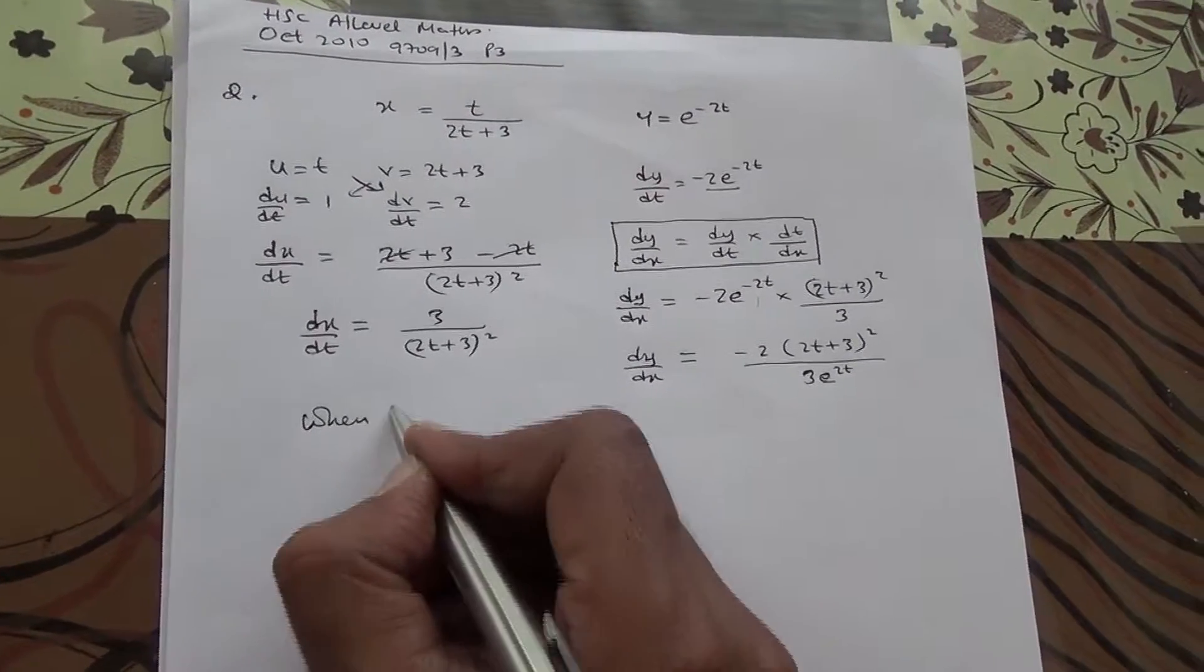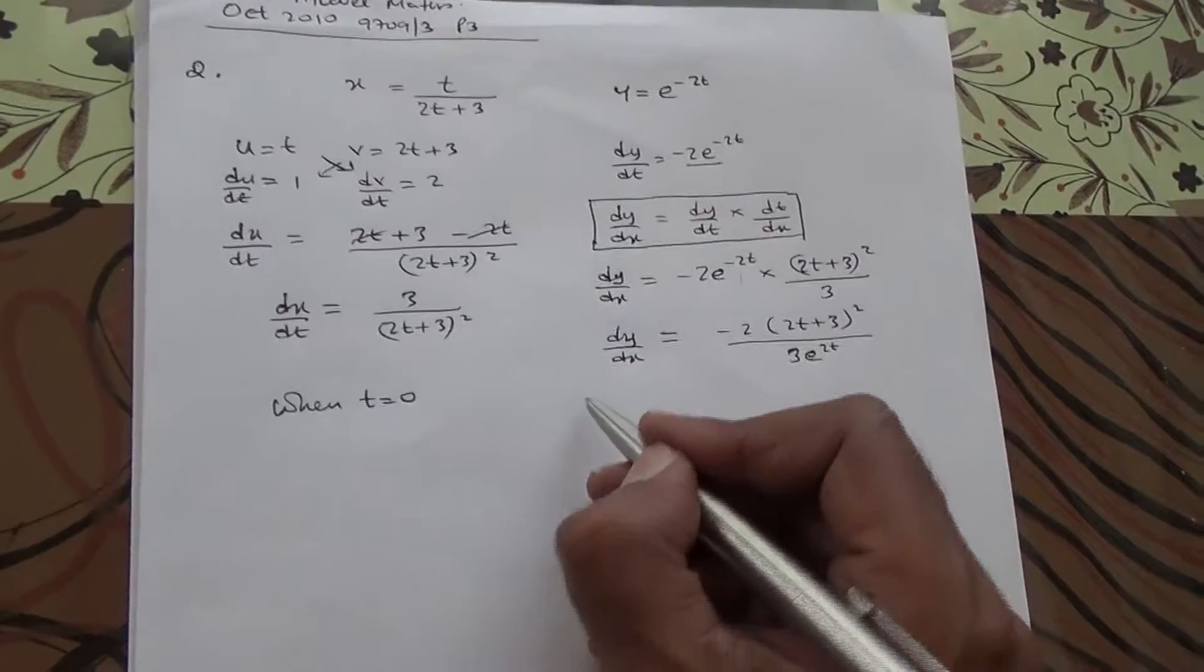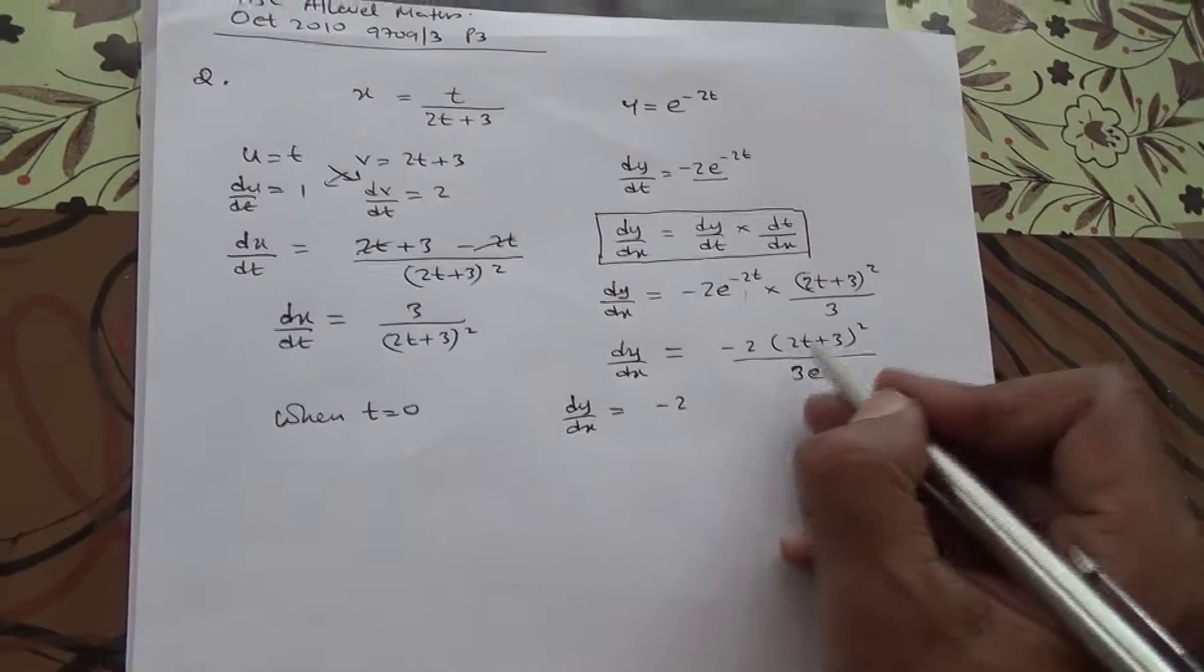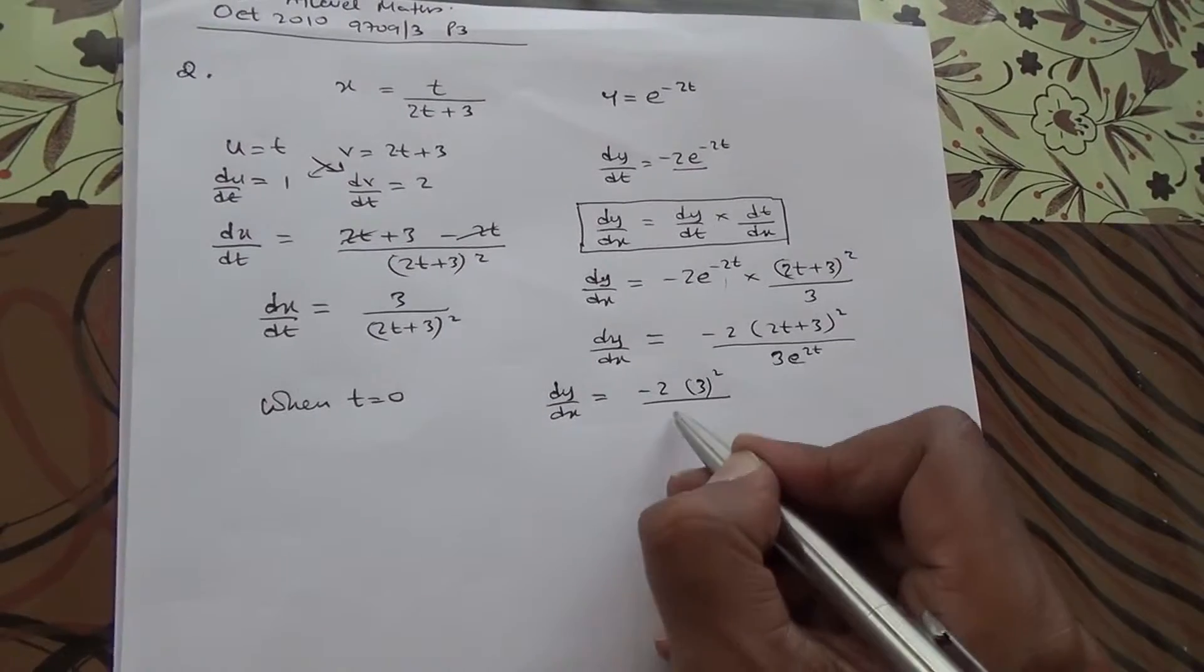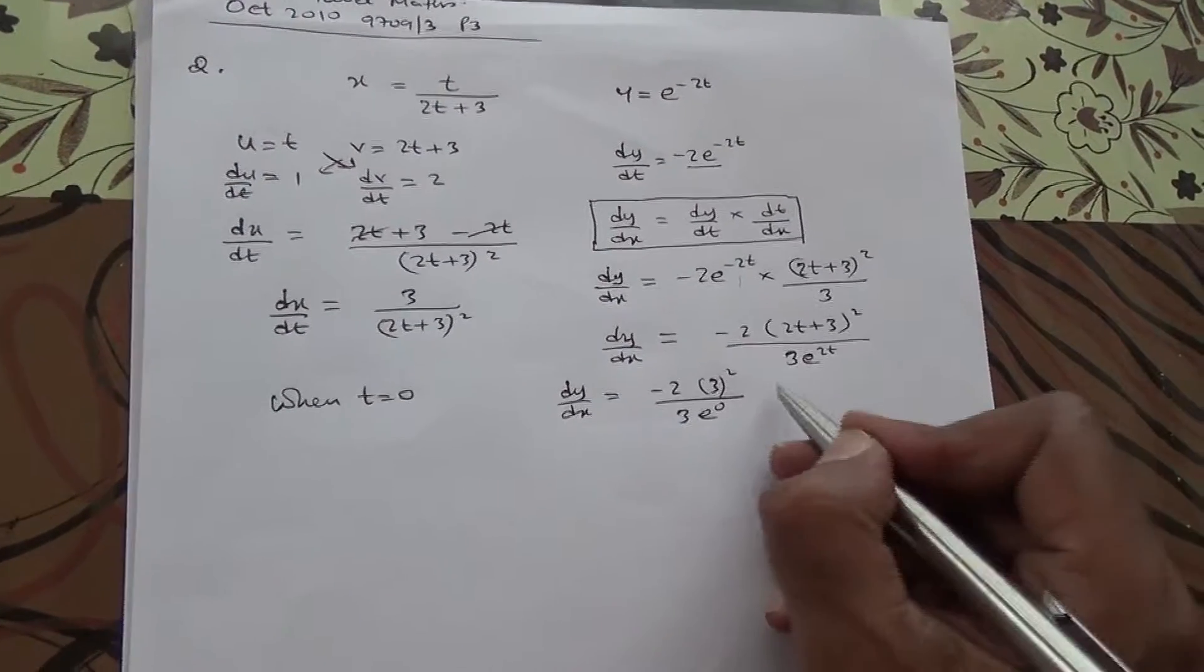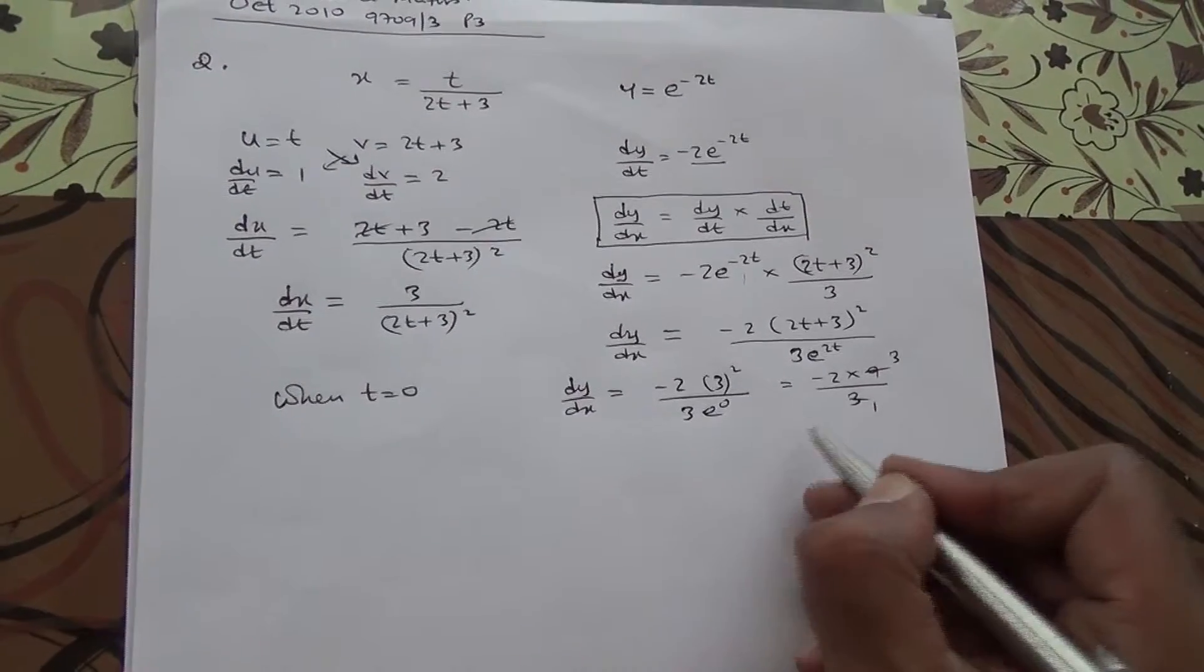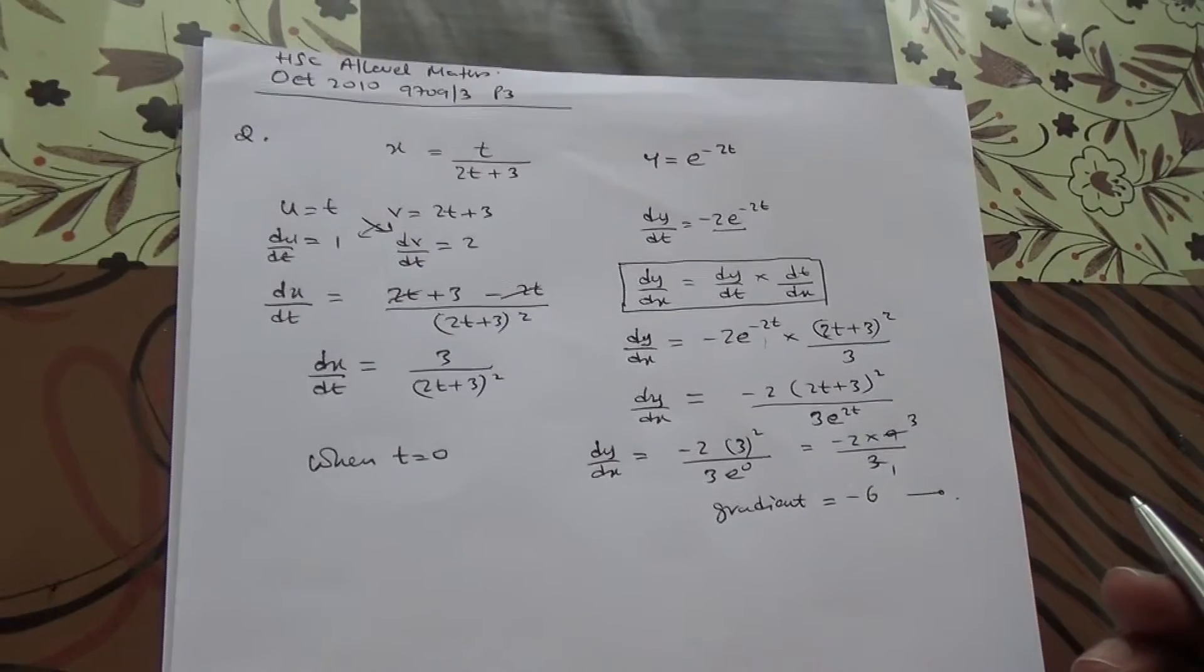Now, what happens when t equals 0? So, we just need to substitute t in here and find the gradient. This is actually the gradient. So, therefore, I'm going to say that dy by dx equals minus 2 times 2 times t. 2 times t is 0, so 2 times 0 is 0. 0 plus 3 is 3, so we have 3 to the square, whole divided by 3, times e to the power of 2t. t is 0, so e to the power of 0, and I'm going to be left with minus 2 times 9 over 3, because this is 1, 1 times 3 is 3. So, 3 goes in 3, 1, 3 goes in 9, 3, and that's going to be minus 6. Therefore, here we are for the gradient for which t equals 0.